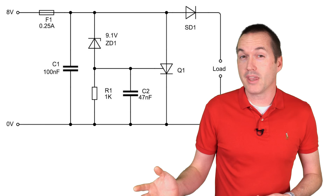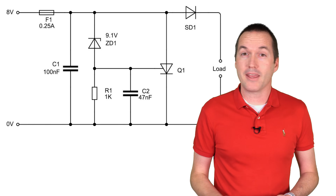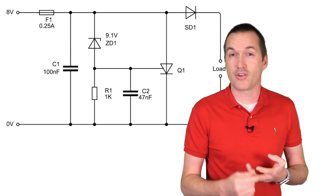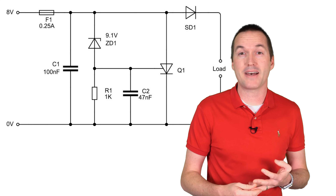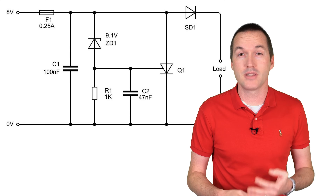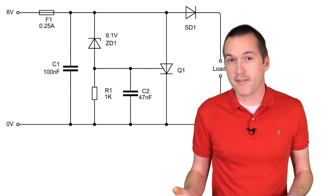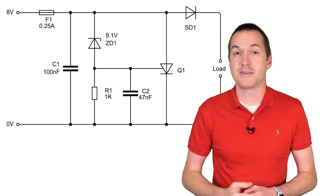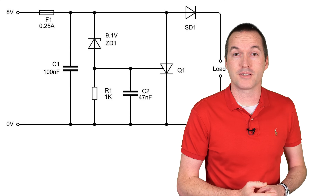When looking at a wiring schematic you'll see components like resistors, transistors, capacitors, and diodes, but in real life the lines that connect them can be just as important to the overall system.